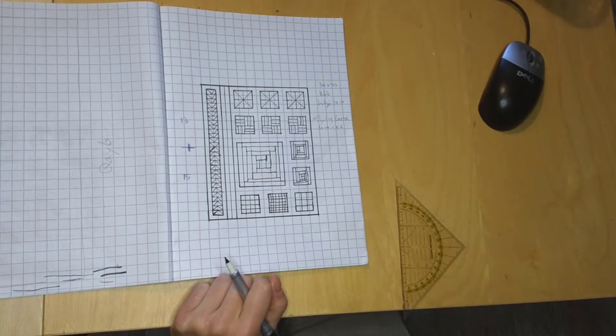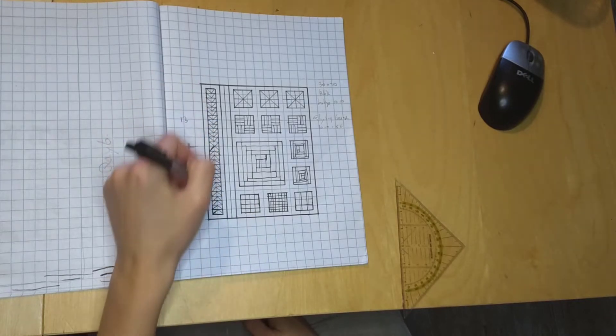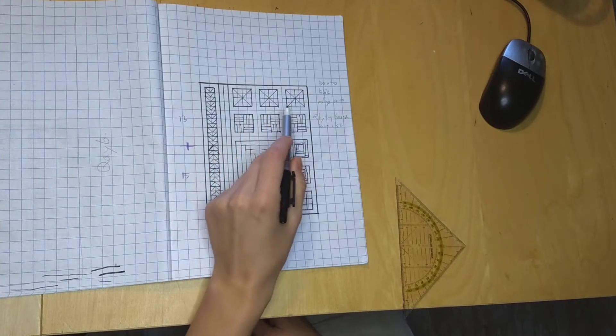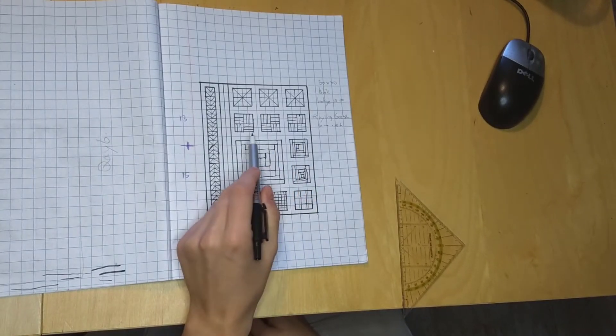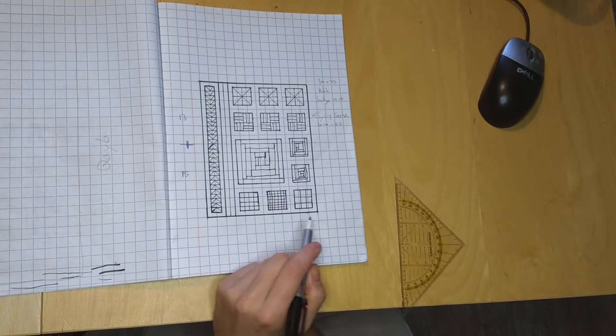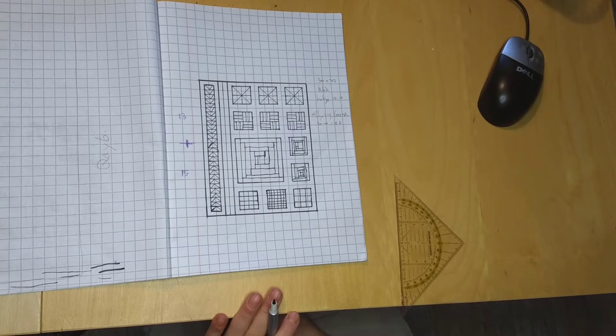Because in this module I will teach you how to make five basic blocks, namely the flying geese, this one, the pinwheel quilt, this one, the Roman square, which is this one, the log cabin, which is this one, and the nine patch, which you actually already know from the A to Z lessons, but I will explain it anyway for the people who are new.